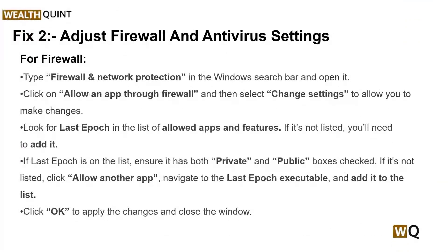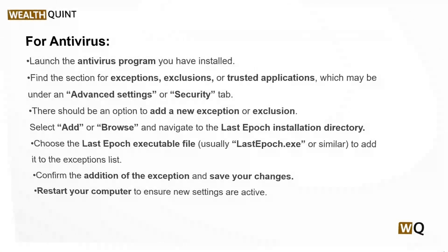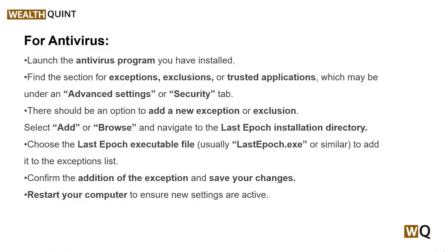Solution 2: Adjust firewall and antivirus settings. Your firewall or antivirus software might be blocking Last Approach from accessing the internet. Adjusting these settings can help resolve the online play unavailable error. Follow the on-screen instructions — the first set of steps is for the firewall and the second is for antivirus.